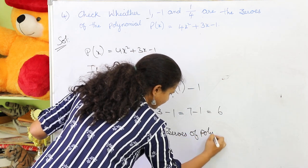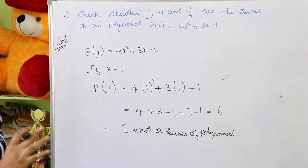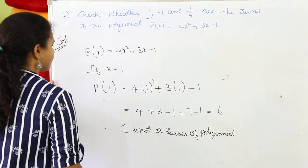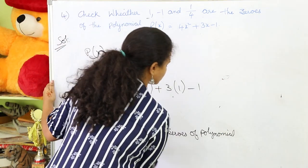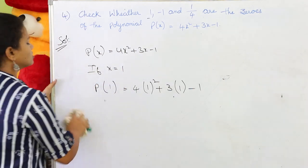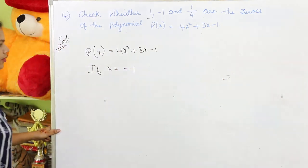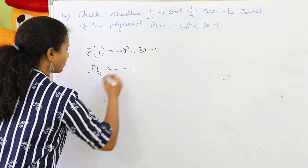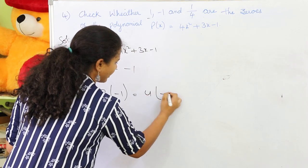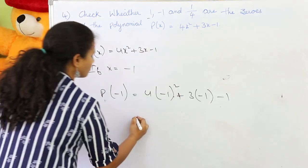Now let's go to the second one and check whether -1 is a zero of the polynomial. If x = -1, the given polynomial is p(-1) = 4 × (-1)² + 3 × (-1) - 1.